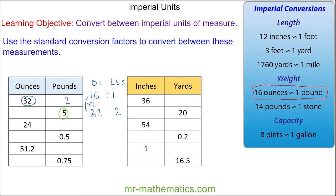And 5 pounds would be 1 times 5, which is 5, and 16 times 5, which is 80 ounces.